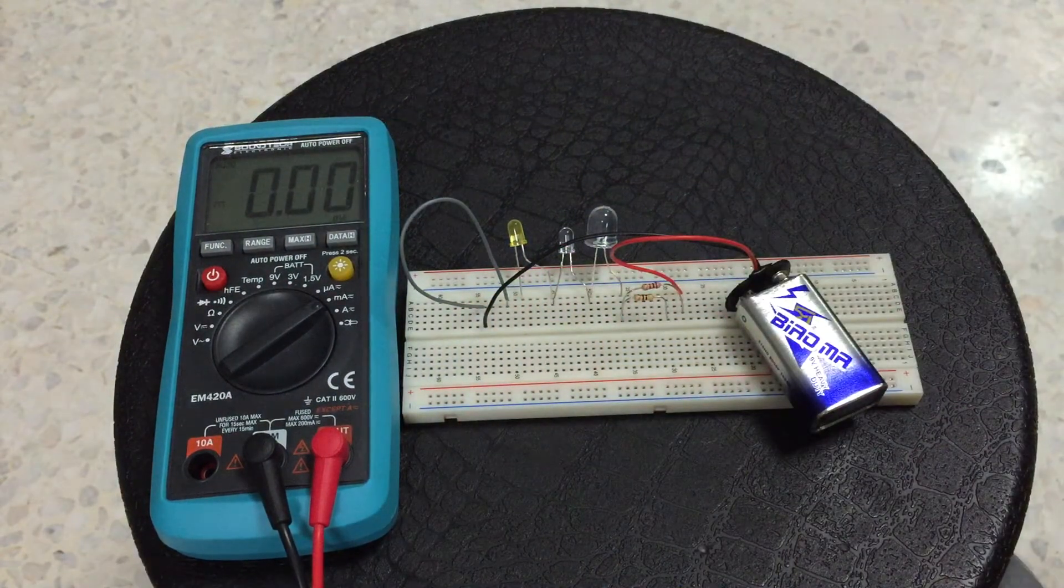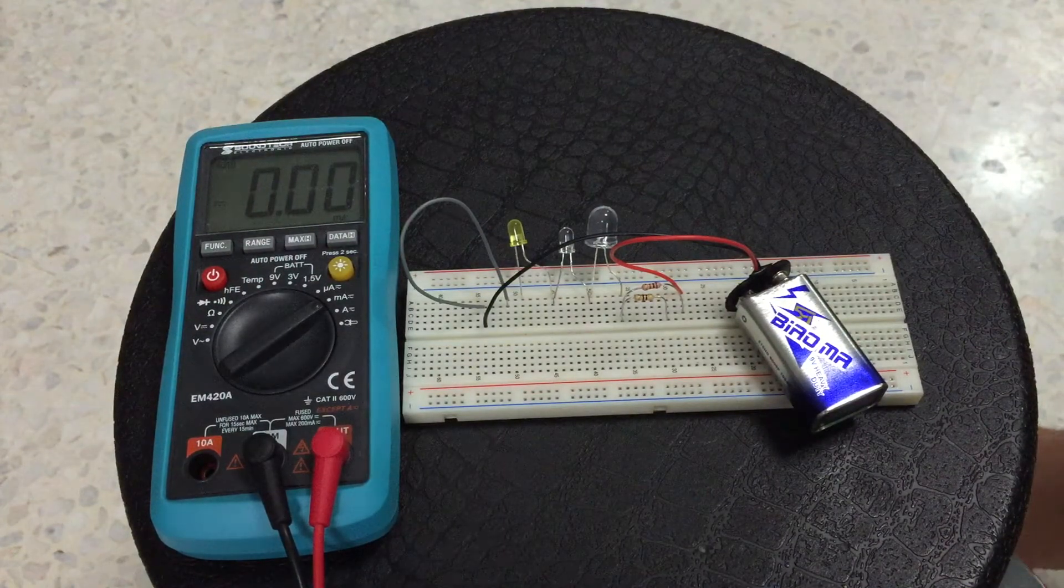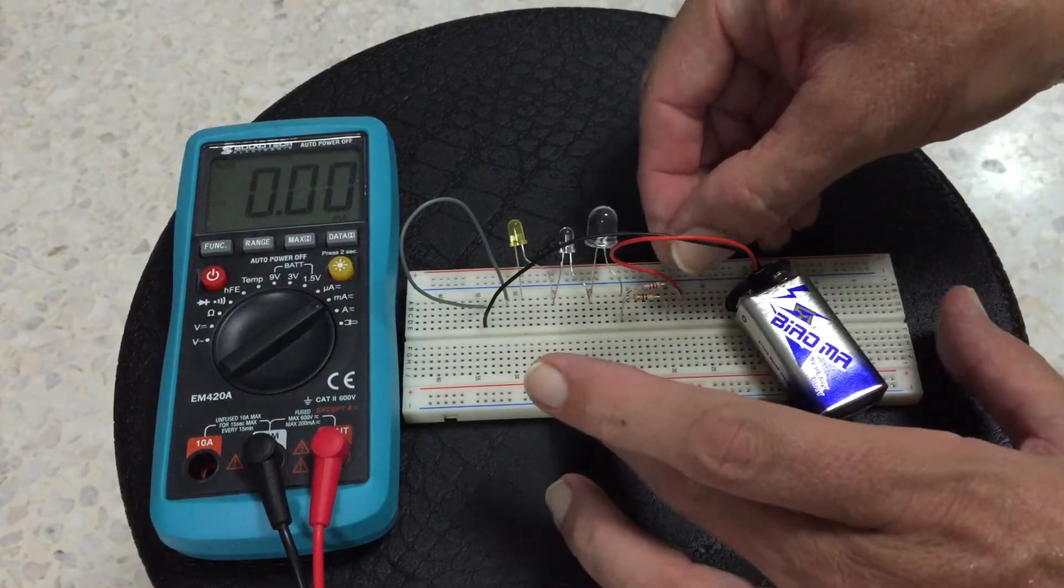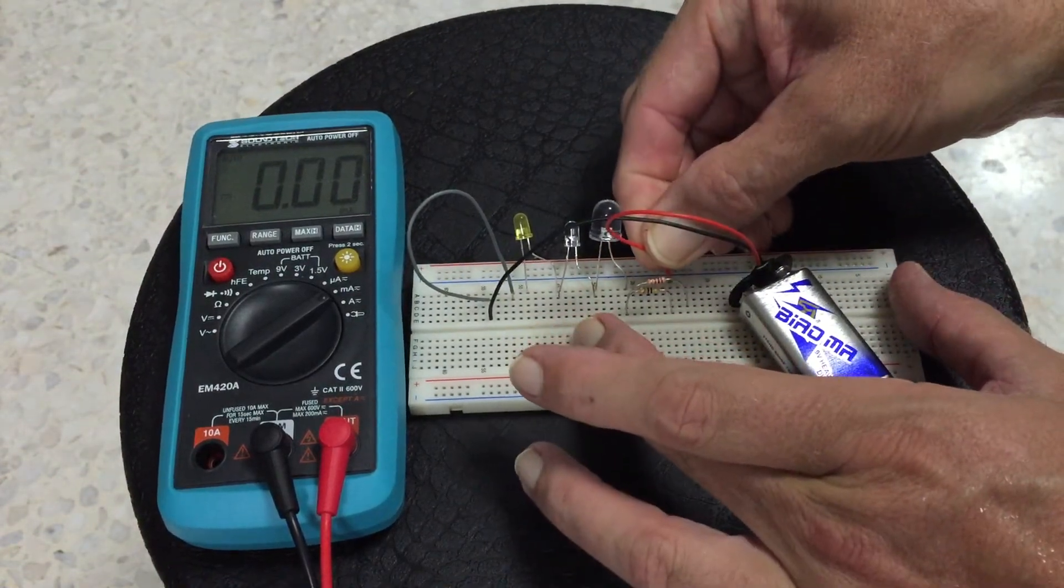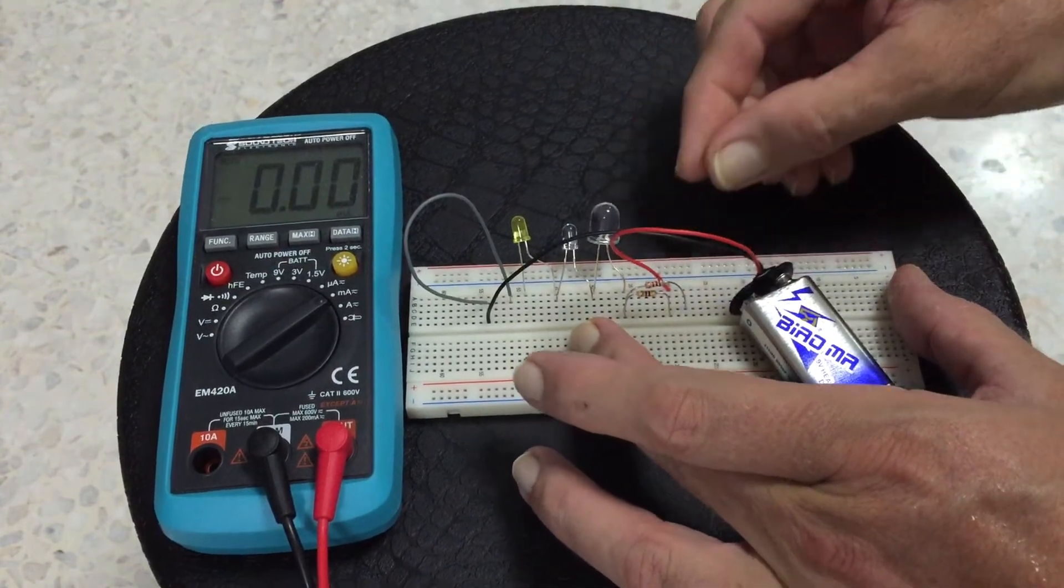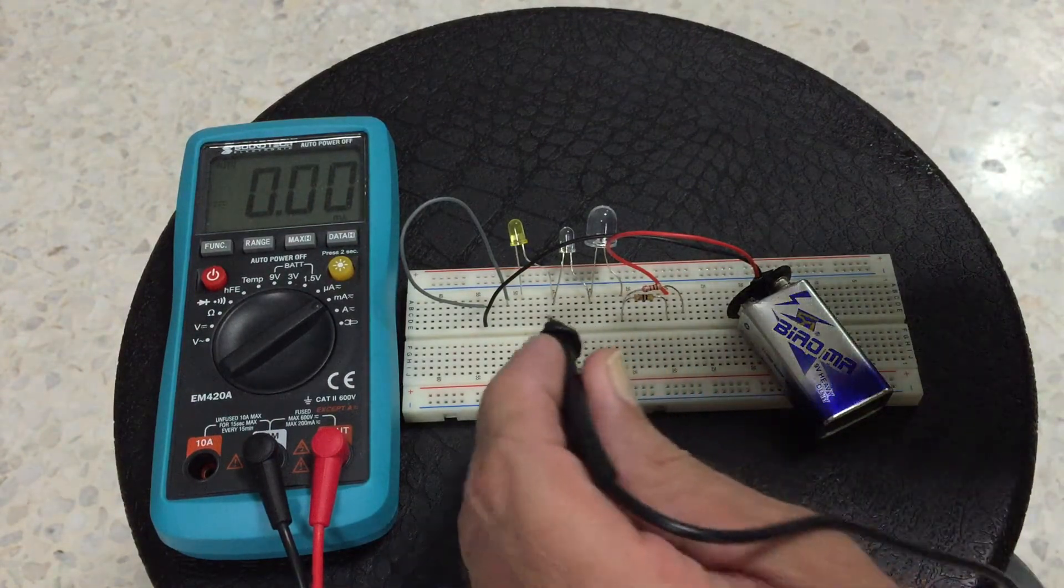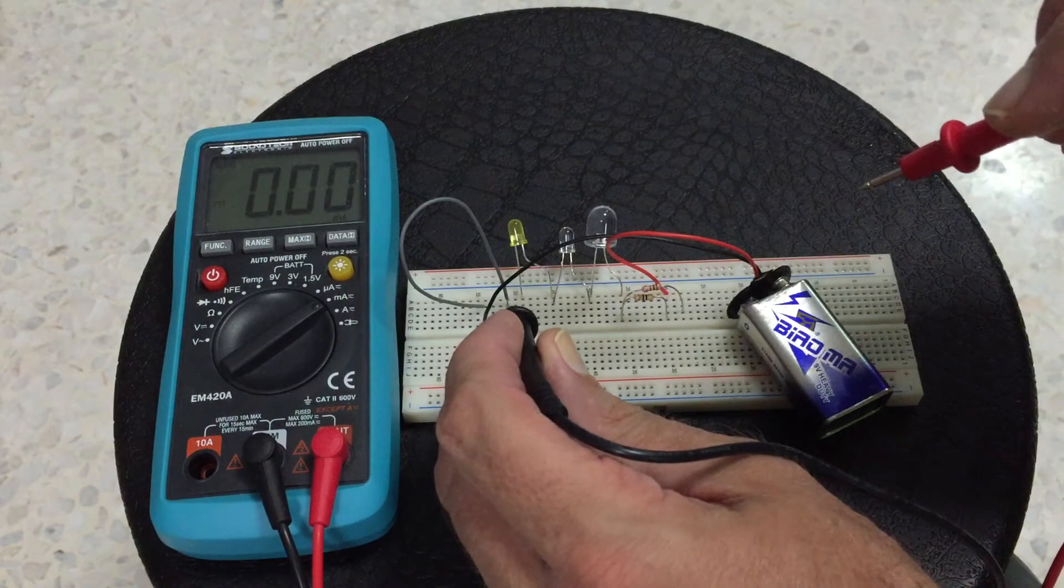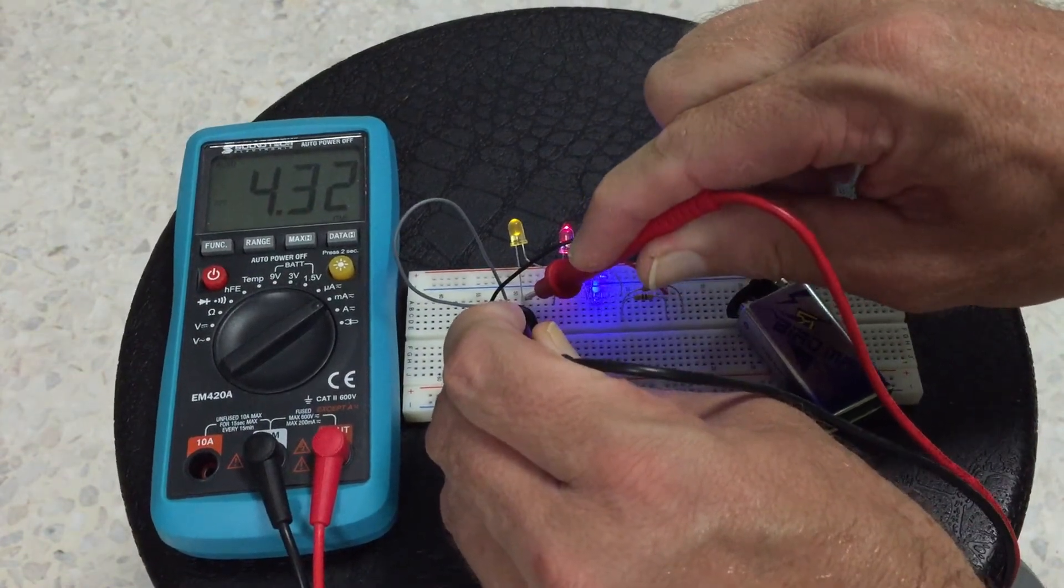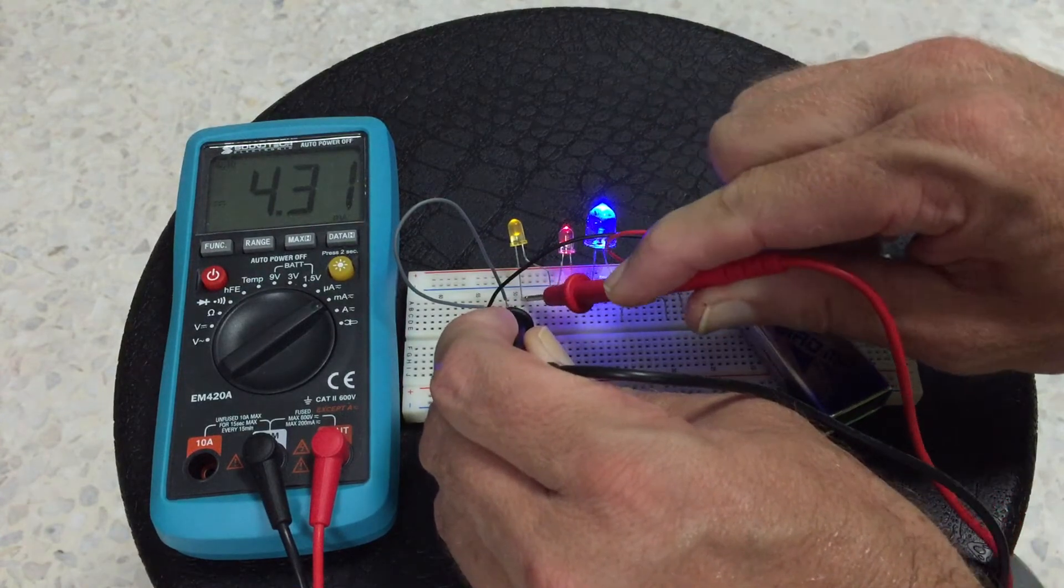Now let's change the resistor that's in series. At the moment we've got a small value resistor. Now let's go to the other resistor which is now about four times bigger, four or five times bigger and again we'll fix the circuit and now it's gone down to only 4.3 milliamps and the LEDs are not so bright.